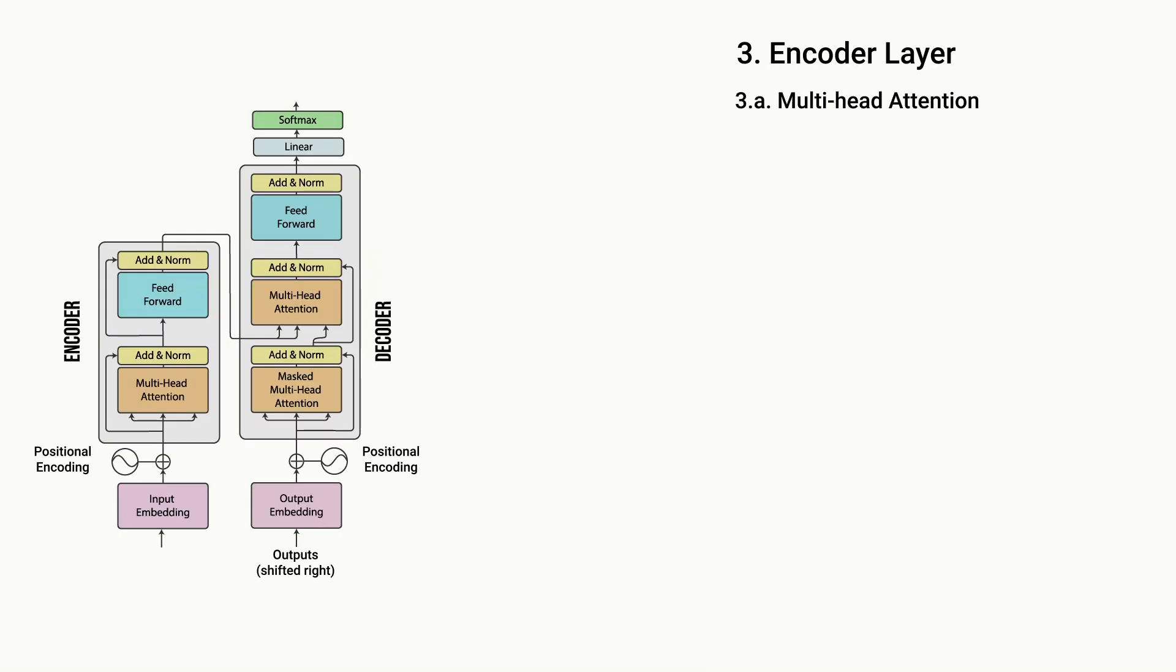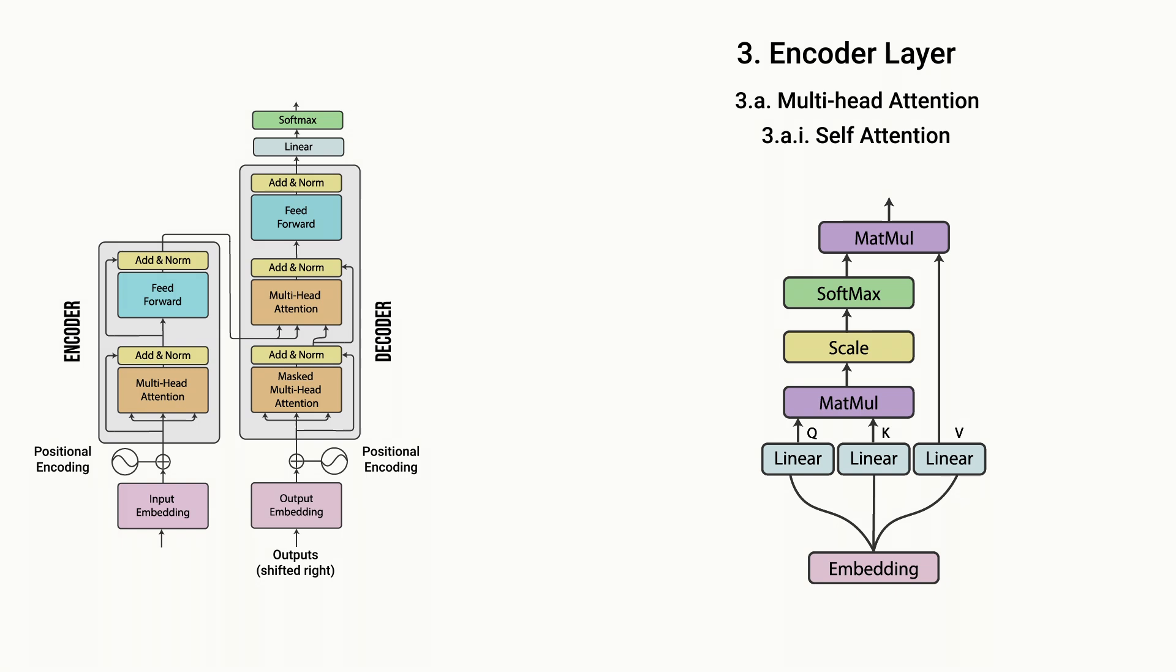While in the transformer encoder, a slight variation of this vanilla attention is used, and this is known as self-attention, which in this case simply allows the encoder to compute the relevancy of each word in the sentence to all the other words in the same sentence. So this means that the query, key, and value vectors all come from the same sequence. So when encoding the input sentence, self-attention allows the decoder to learn that the word student is most relevant to the word I.